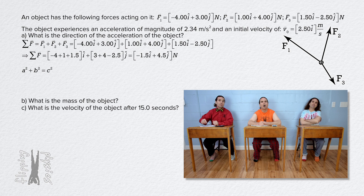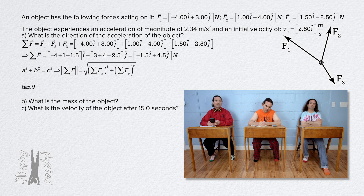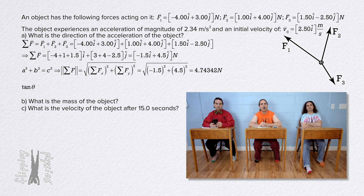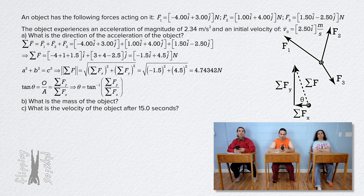We can use the Pythagorean theorem and tangent theta to determine the magnitude and direction of the net force. The magnitude equals the square root of the net force in the x-direction squared plus the net force in the y-direction squared — the square root of negative 1.5 squared plus 4.5 squared — or 4.74342 newtons. Tangent theta equals the net force in the y-direction over the net force in the x-direction, so theta equals the inverse tangent of 4.5 divided by negative 1.5.